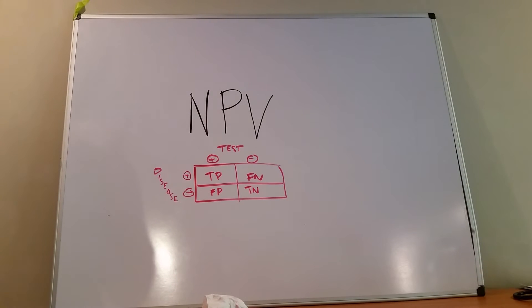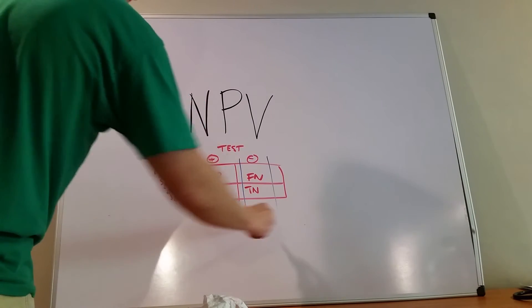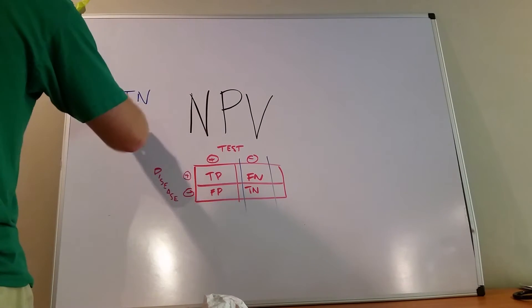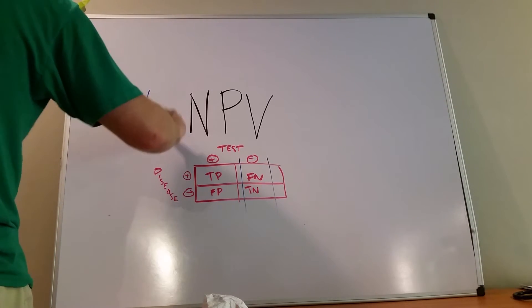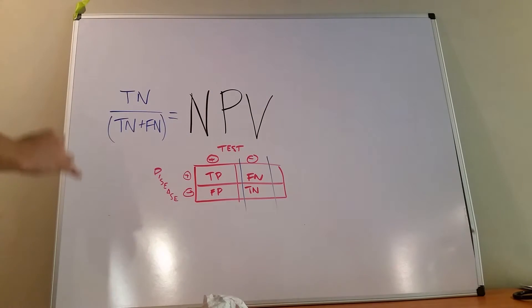You should be familiar with this two by two. Look for our other video on it if you aren't familiar with it. But on to the NPV or negative predictive value. It looks at one column of this two by two, and that is the true negatives over the total number of negatives, which is false negatives and true negatives. This ratio ends up giving you what the NPV is.